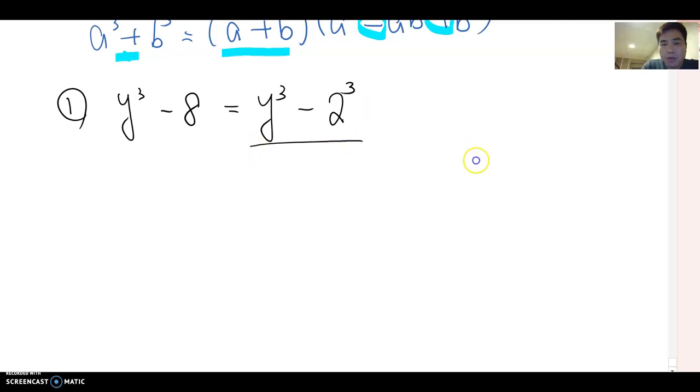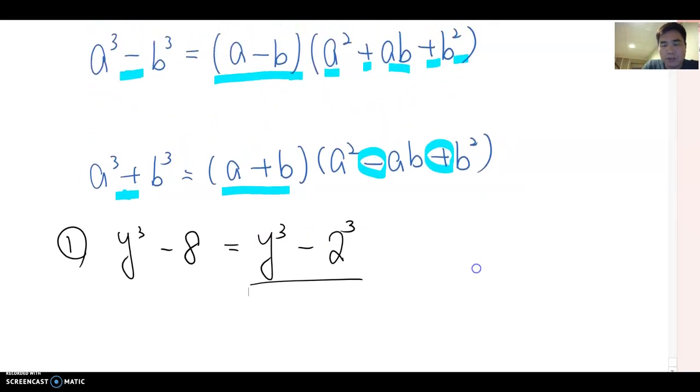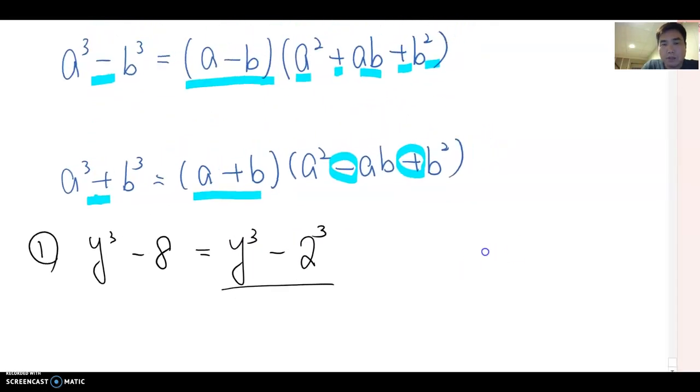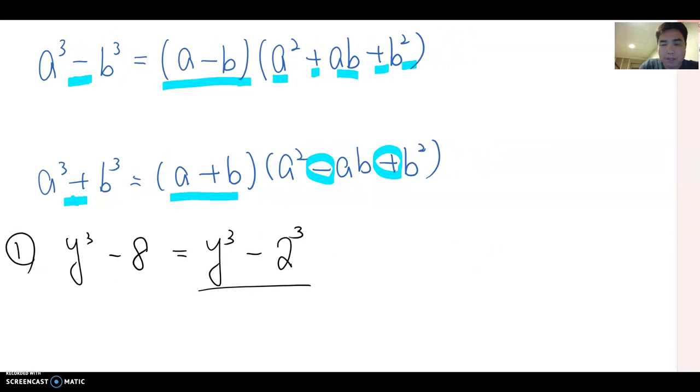Now, this one looks like the first form here. So I'm going to follow this formula and then make factoring of this binomial. Then this becomes y minus 2, and then y square and plus. Because this is minus, then this must be plus. And then 2y also plus 2 square, which is 4. That will be the answer for this binomial factoring.